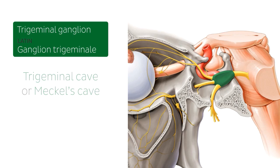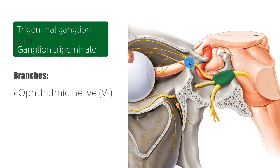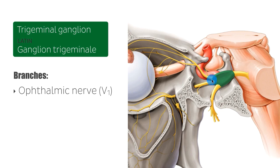These branches can be seen here on this image a bit more clearly. You can see here the ophthalmic nerve, or the ophthalmic branch of the trigeminal nerve, right here.